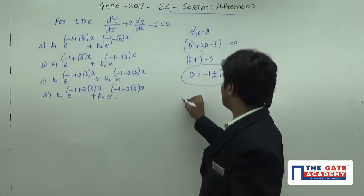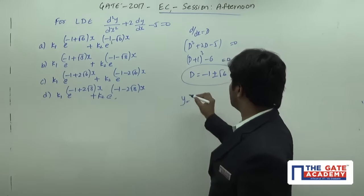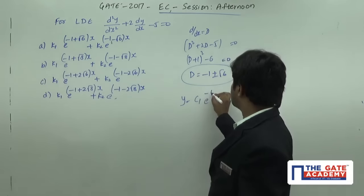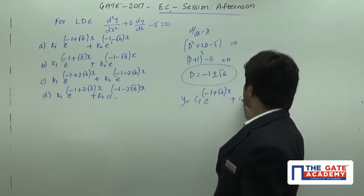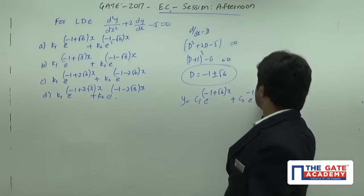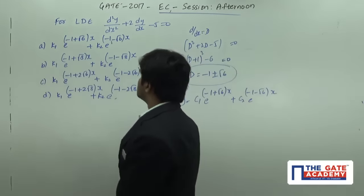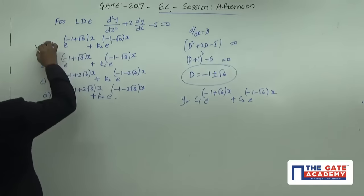Then the roots are going to be, the solution is going to be y equals c1 e power minus 1 plus root 6x plus c2 e power minus 1 minus root 6x. So the answer for this particular problem is option A.